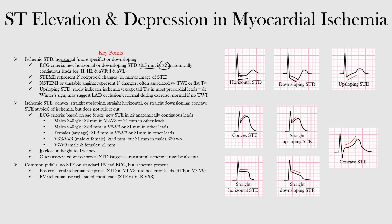Upsloping ST depression is rarely the result of ischemia, unless it occurs with prominent T waves in most of the precordial leads, in which case it may suggest an acute LAD occlusion — referred to as de Winter sign. Upsloping ST depression is often a normal physiologic finding during exercise and should generally be considered normal as long as there is no associated T wave inversion.